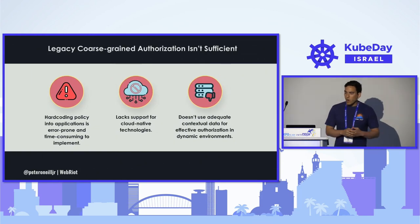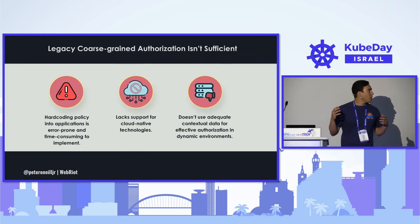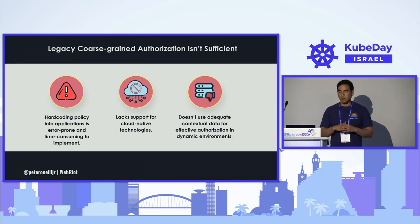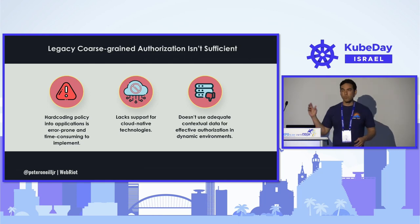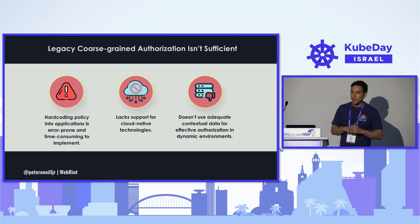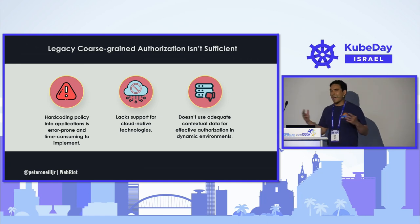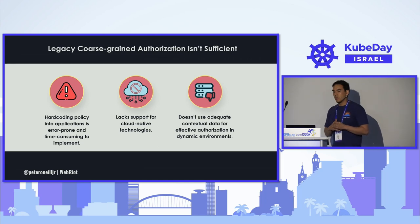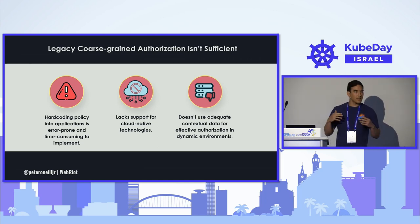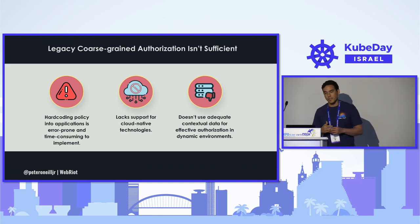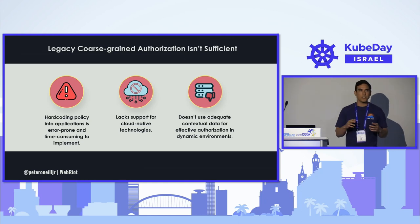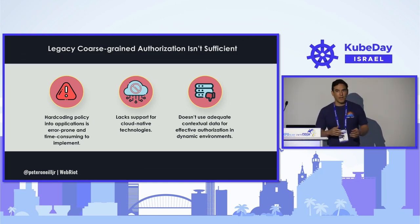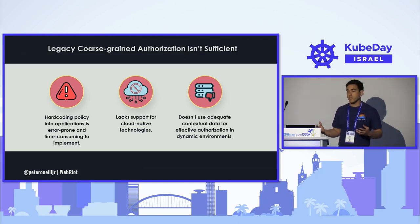The reasons that a coarse-grained system — we're talking very simple RBAC policies or just users, where you have one simple rule around what a user can or can't do — won't work is that it lacks a lot of the complexities that our cloud-native systems need. These policies end up being hard-coded directly into the application, they end up being very error-prone, and there's a lot of things that just don't work very well for the complexities of the systems that we want to create.